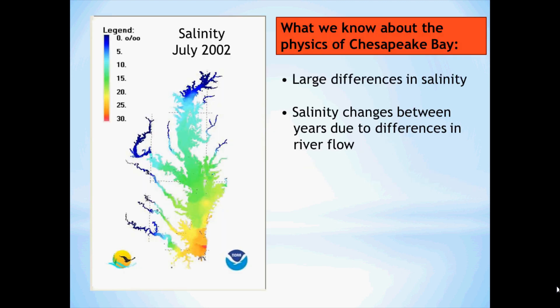What do we know about the physics of Chesapeake Bay? We know that there are large differences in salinity. Salinity, or the amount of salt in the water, varies from zero near the head of the rivers down to almost 30 near the mouth. We also know that salinity changes between years due to differences in river flow.